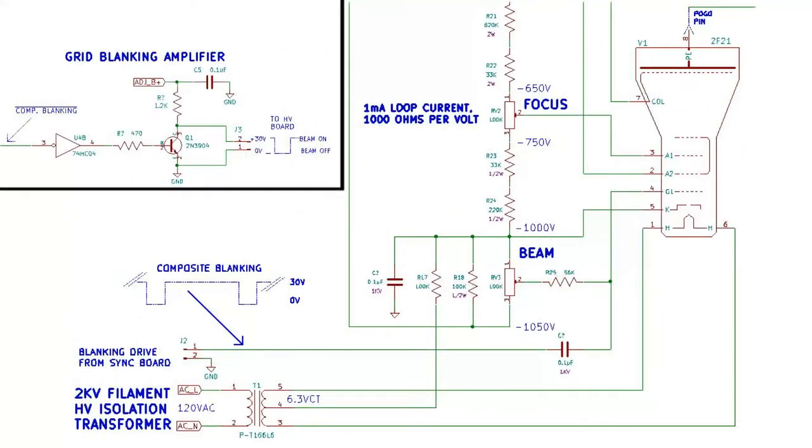Looking at this diagram, in the upper left corner I show the circuit on the sync board, sync and deflection board, that generates the 30 volt pulse used to switch the beam off and on in the monoscope tube. It's a very simple circuit.